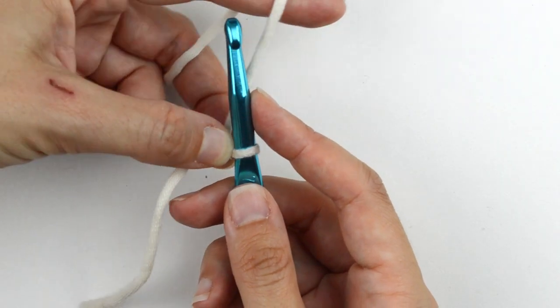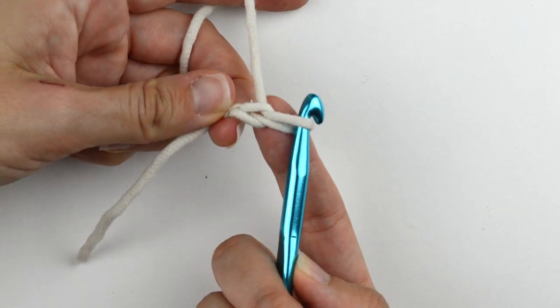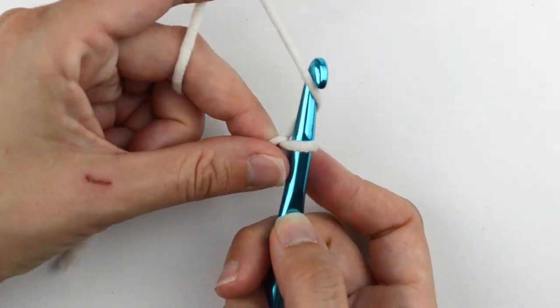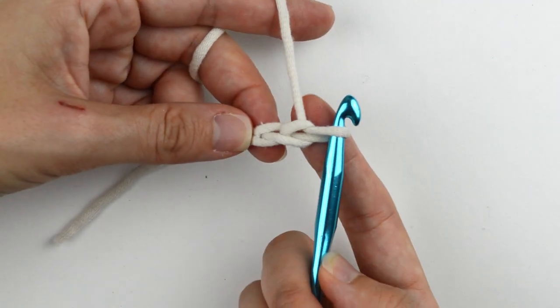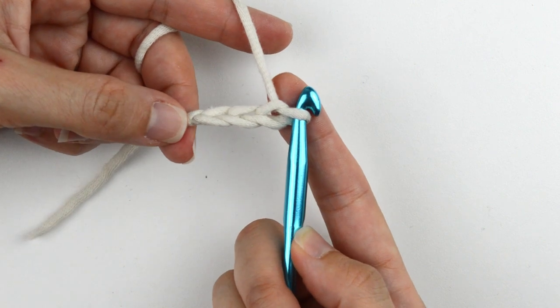Then make a chain by wrapping your yarn over the hook and pulling through the loop that's on your hook. That's the first chain. For this tutorial, I'm going to be making a total of three chains. You can make more than that for a wider cord. For my cotton drawstring, I made four.